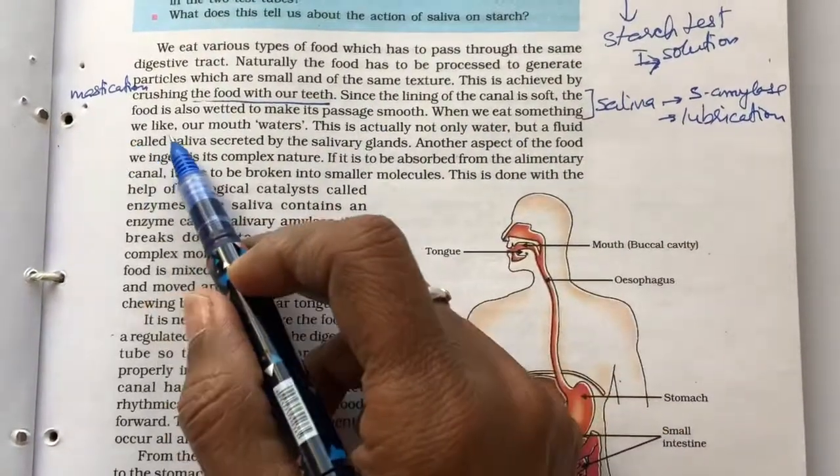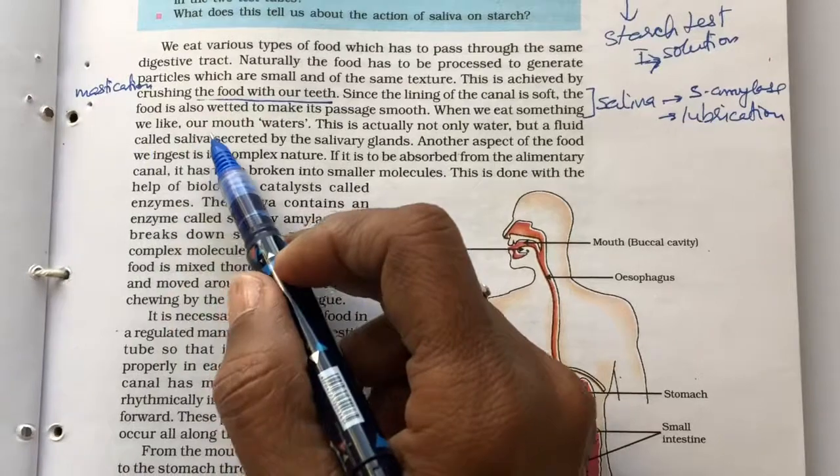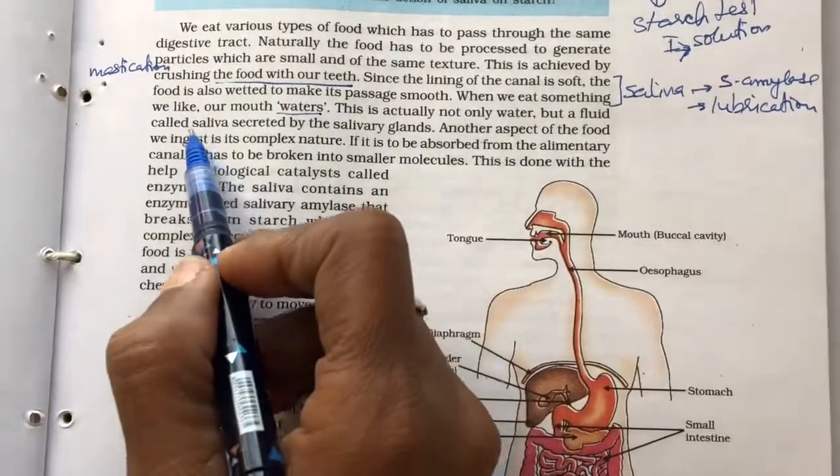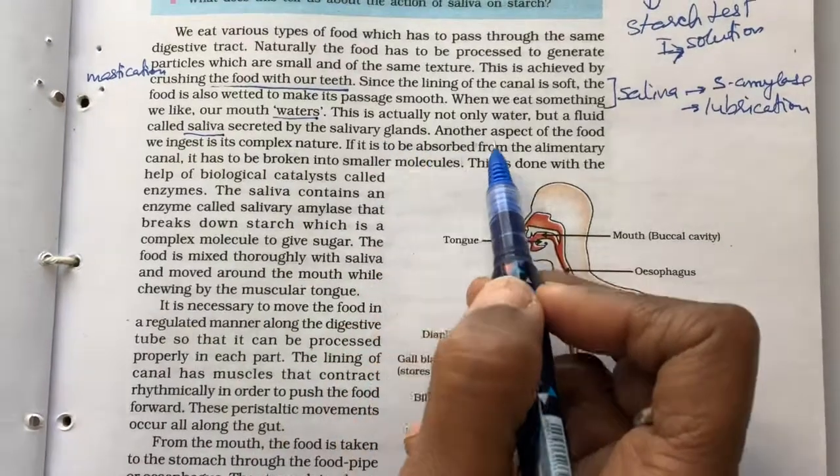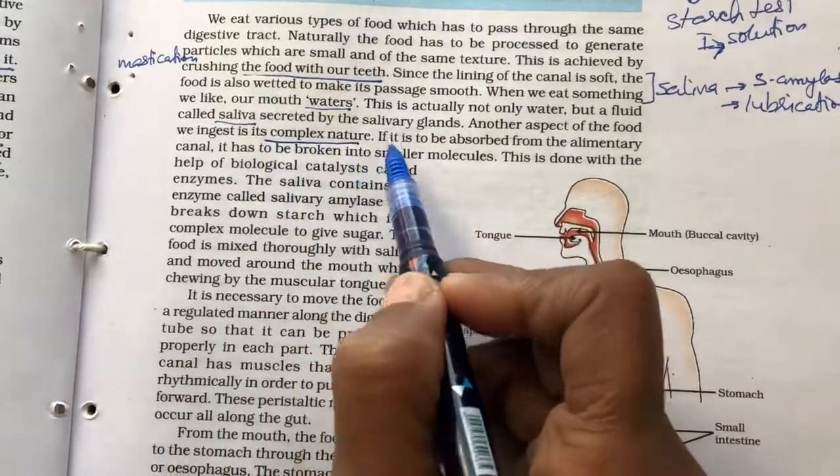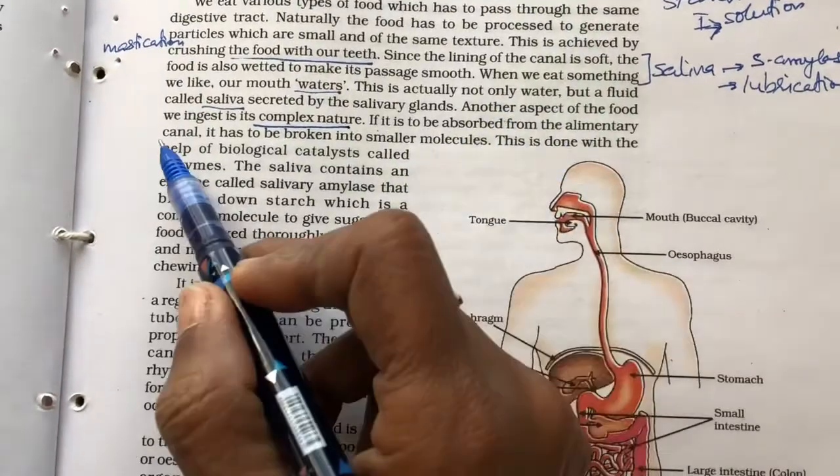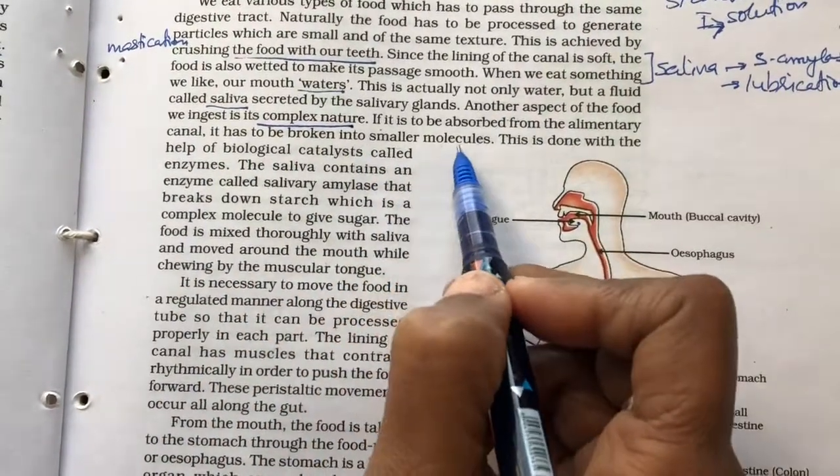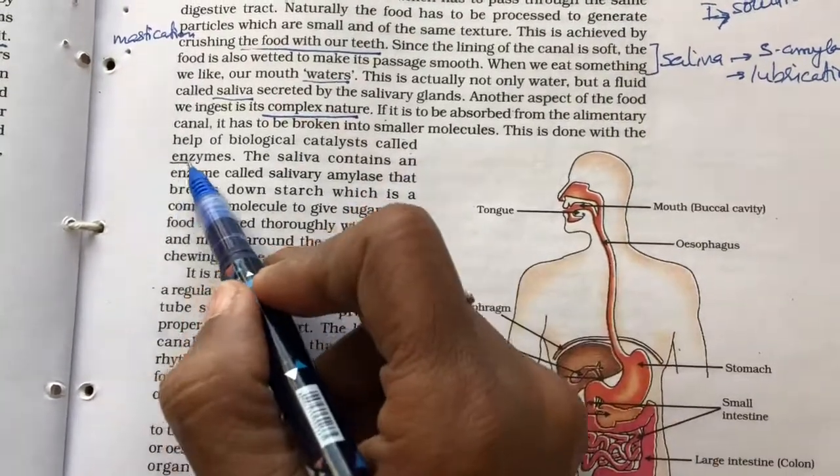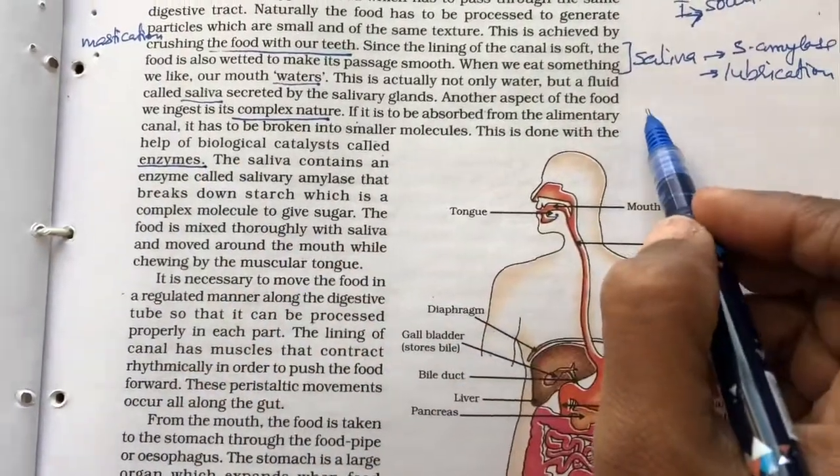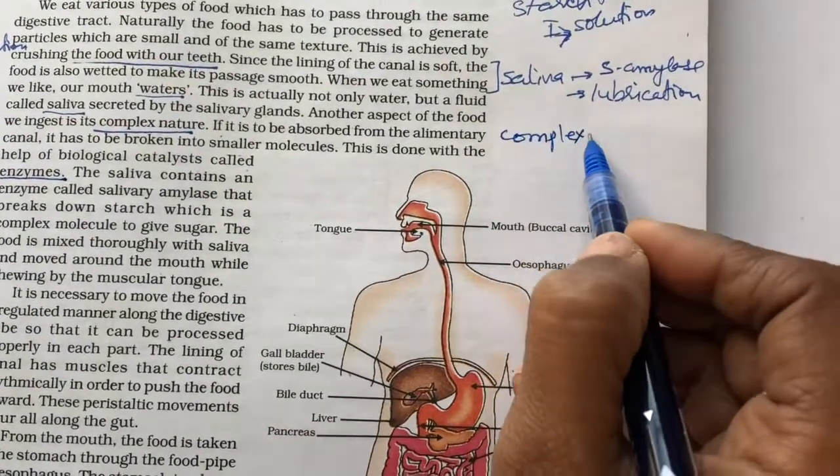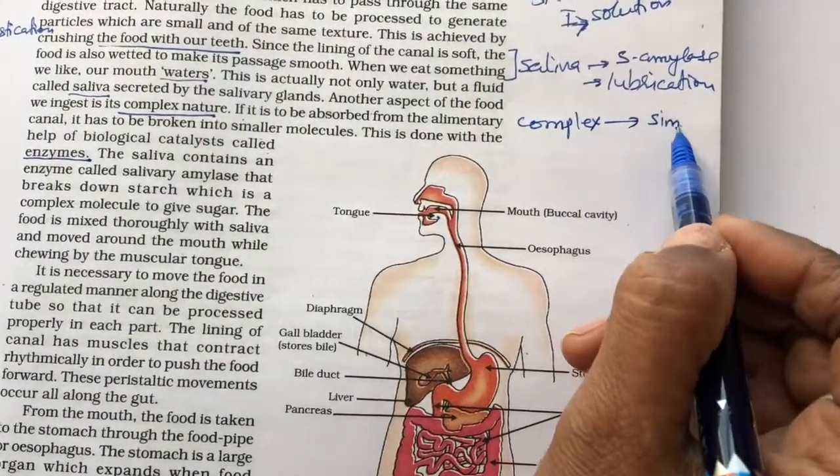When we eat something we like, our mouth waters. This is actually not only water, but a fluid called saliva secreted by the salivary glands. Another aspect of food we ingest is its complex nature. If it is to be absorbed from the alimentary canal, it has to be broken down into smaller molecules. This is done with the help of biological catalysts called enzymes. So what is happening is when we eat the food, it is complex food. It has to be converted into simpler forms.